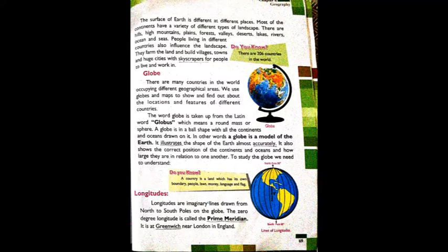To study the globe, we need to understand certain things. When you use a globe, the first thing to know is longitudes. Longitudes are imaginary lines drawn from the north pole to the south pole - these imaginary lines are called longitudes. The zero degree longitude is called the prime meridian, which is located at Greenwich, near London, in England.